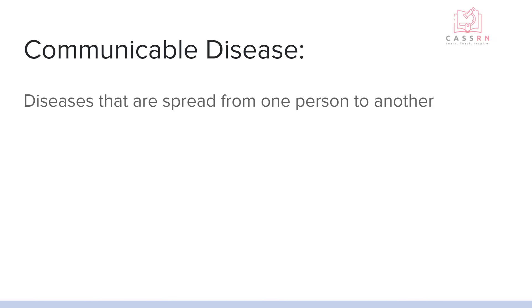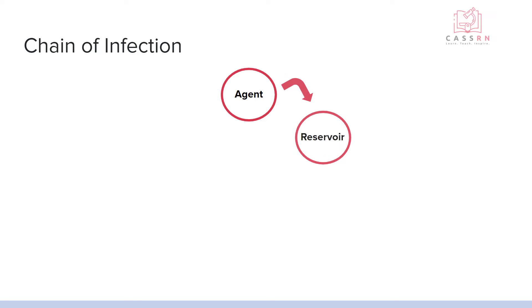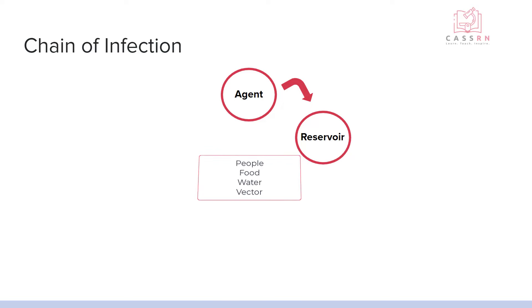A communicable disease is a disease that is spread from one person to another, and we're going to review the chain of infection, which you remember from your biology and microbiology classes. We're going to start with an agent — this is the thing that is the disease. It's going to be collected in a reservoir of some sort. This can be another human, stagnant water, a tabletop, anything where it's just going to hang out and survive.